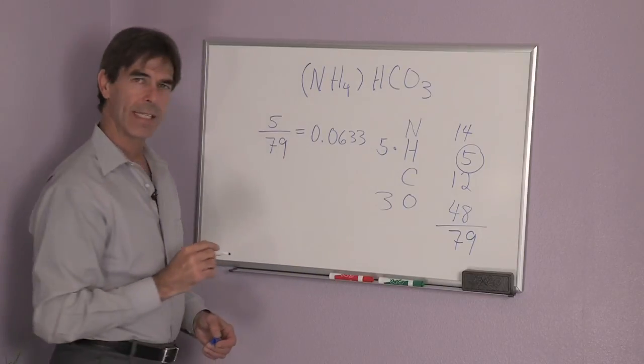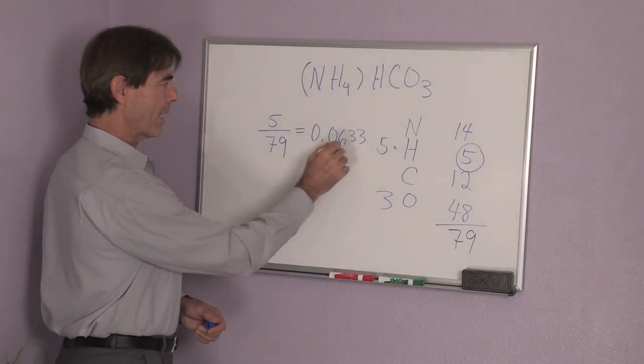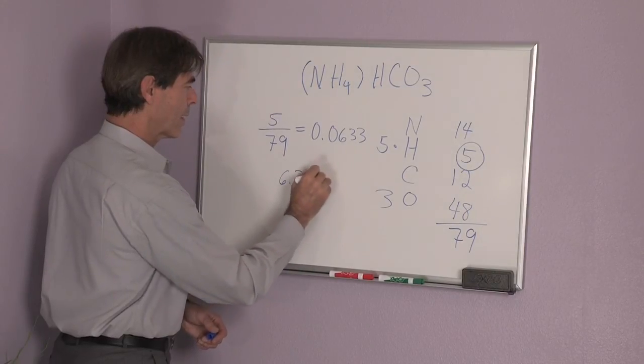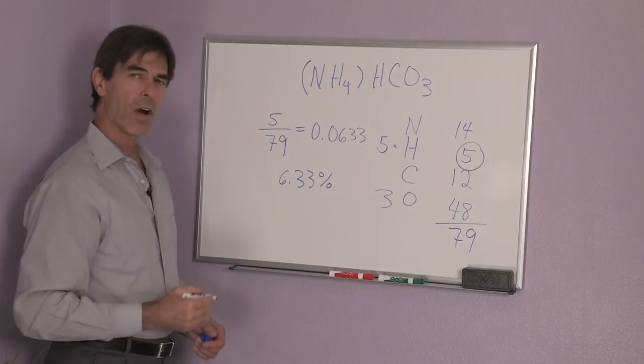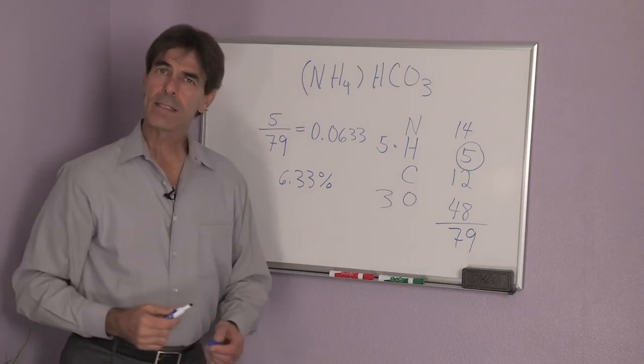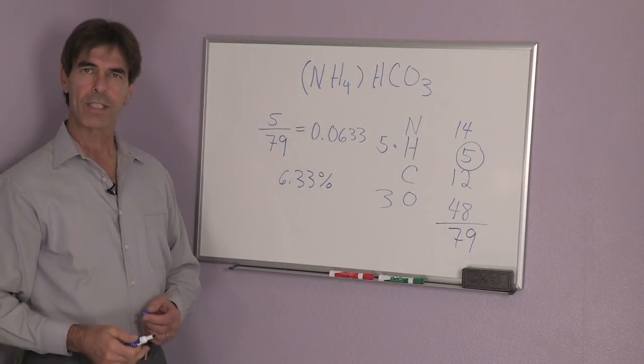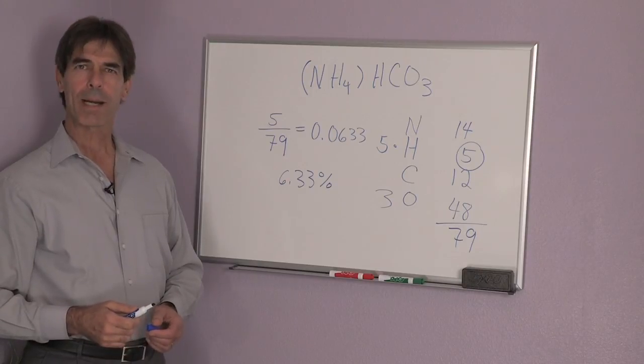To change this into a percentage, we have to multiply that by 100. So 6.33% is the mass fraction of hydrogen in ammonium bicarbonate.